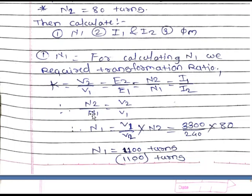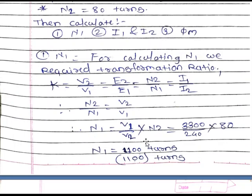Therefore the formula for N1 is equal to V1 by V2 into N2. We transfer N1 to the right-hand side and V2 by V1 to the left-hand side. Therefore N1 is equal to V1 by V2 into N2, which is 3300 divided by 240 into 80. V1 is 3300, V2 is 240, and N2 is 80. The answer is N1 equal to 1100 turns.